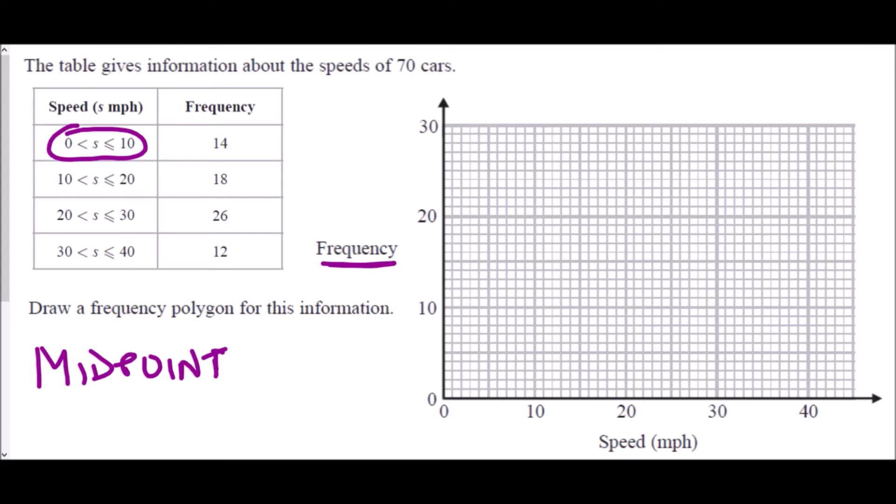So how do we find the midpoint? Well, usually it's quite simple. It's just the halfway point between the two values. But if you want a method that will always work, you can take the start of the group, add the top of the group, so 0 plus 10, and then half it. So 0 plus 10 is 10 divided by 2 is 5, so my midpoint would be 5. In the next group, halfway between 10 and 20 is 15, halfway between 20 and 30 is 25, and halfway between 30 and 40 is 35.